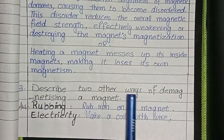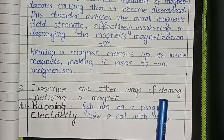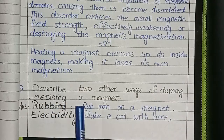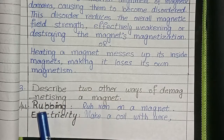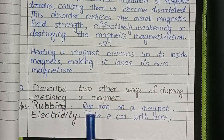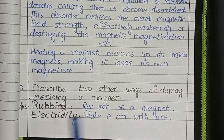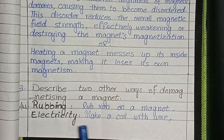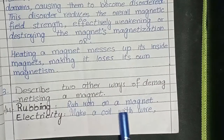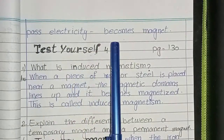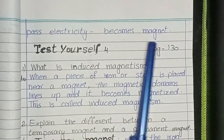Describe two other ways of demagnetizing a magnet. Rubbing: rub iron on a magnet. Electricity: make a coil with wire and pass electricity through it to magnetize or demagnetize.